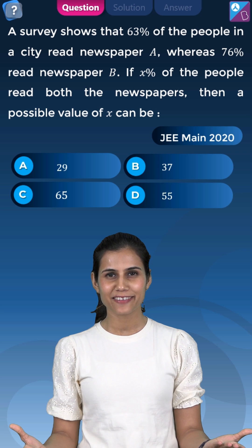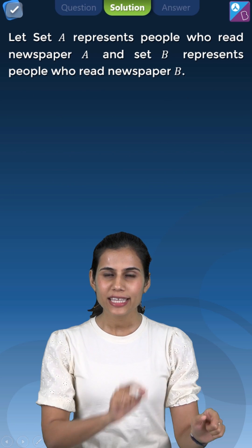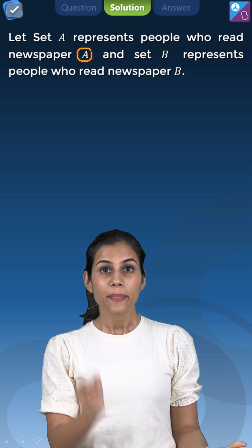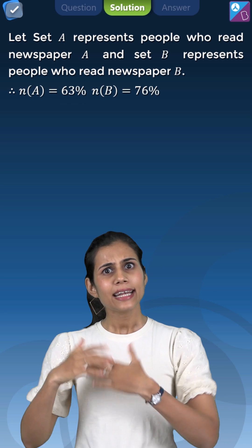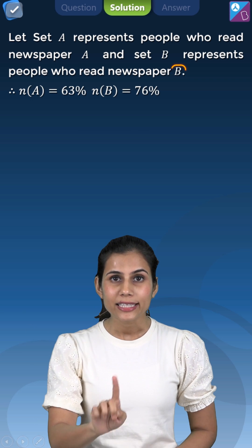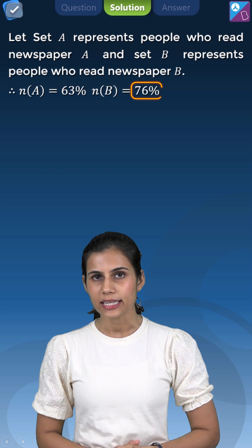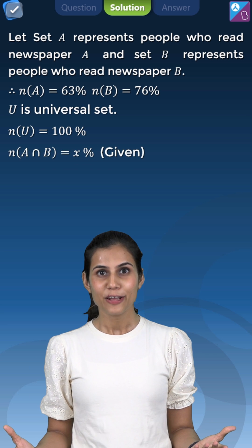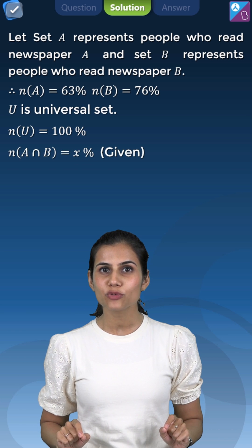Classic set theory. Suppose A represents the set of all those people who read newspaper A, then cardinality of A will be 63%. And let B represent the set of people who read newspaper B, then cardinality of B will be 76%. Obviously, number of members in A intersection B will be X percent. So which formula will come into action?